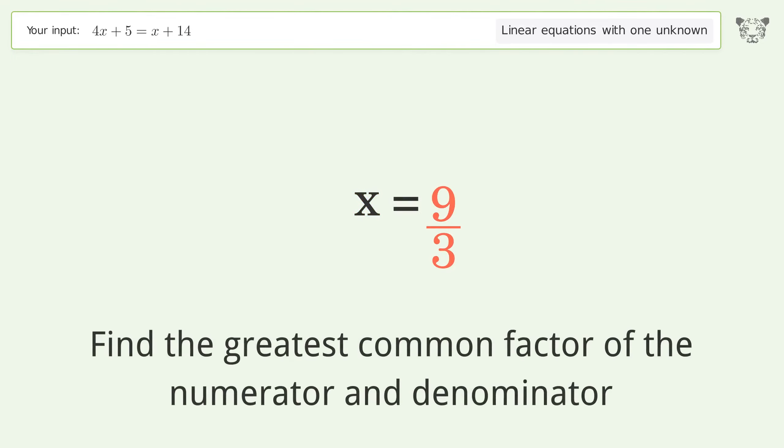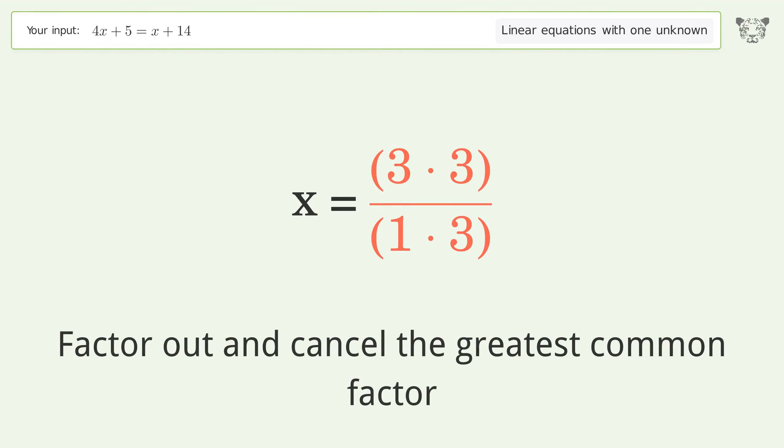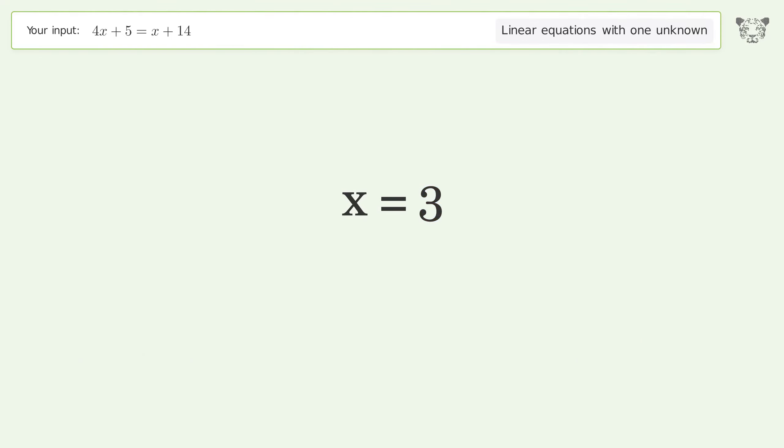Find the greatest common factor of the numerator and denominator. Factor out and cancel the greatest common factor. And so the final result is x equals 3.